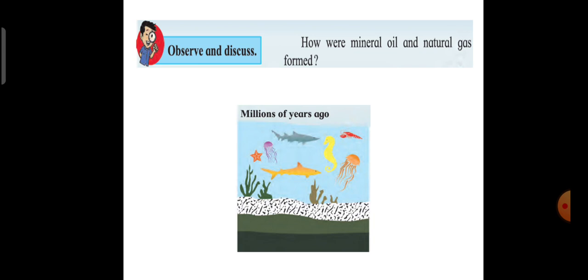How are mineral oil and natural gas formed? Think about it. They are also formed like the coal, which takes millions of years. After millions of years, as coal is formed, so is formed mineral oil and natural gas.